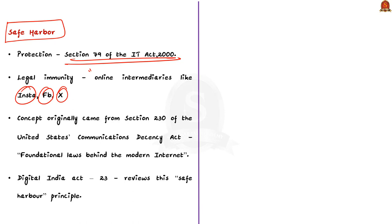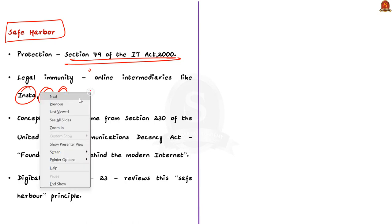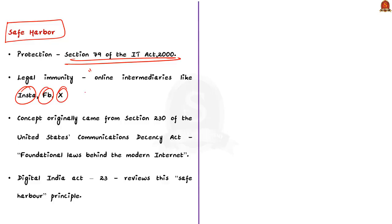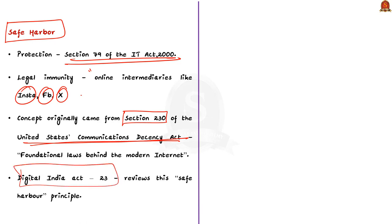This protection is available as long as these platforms abide by certain due diligence requirements such as censoring content when asked by the government or courts. This concept originally came from Section 230 of the United States Communications Decency Act, which has been termed as one of the foundational laws behind the modern internet. Now we should know why this concept has flared up in the recent news. Digital India Act 2023, which was posted to replace the IT Act 2000, reviews this safe harbor principle, which primarily shields the online platforms from the liability related to user-generated content.